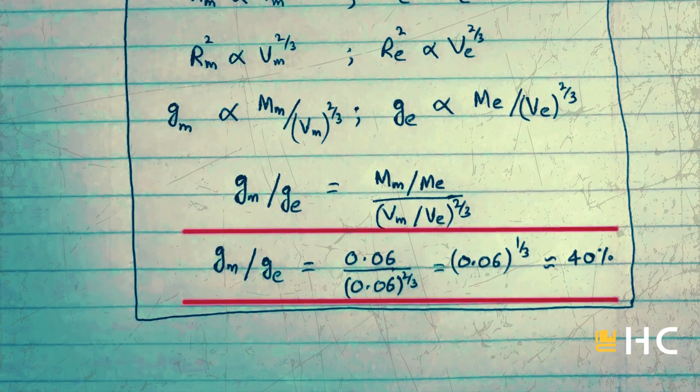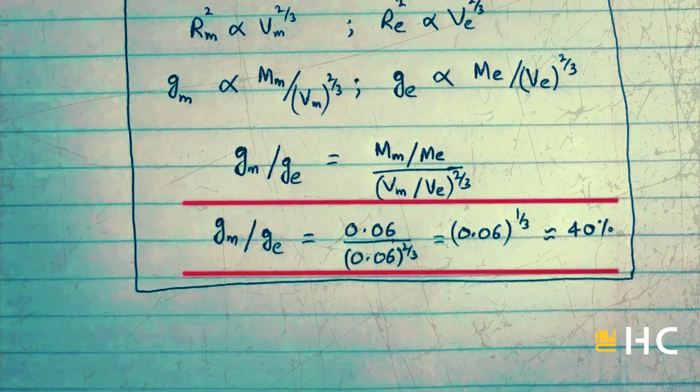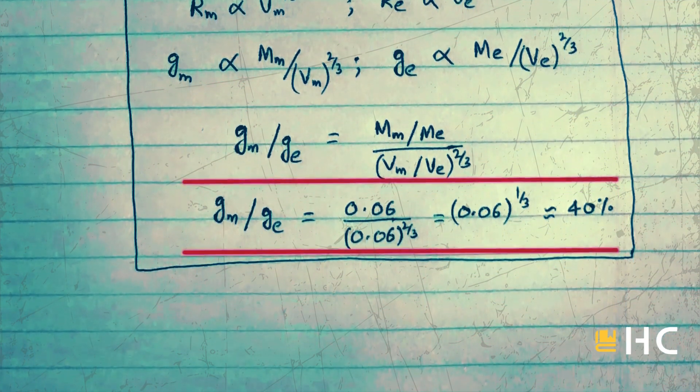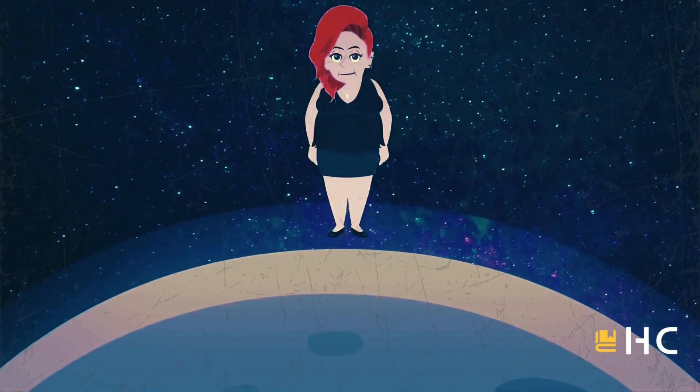That is why your weight of 70 kilograms on Earth will come down to 30 kilograms on Mercury. You can go to Mercury to cut down your weight, but the problem is you may not come back to Earth to show the reduced weight to your friends.